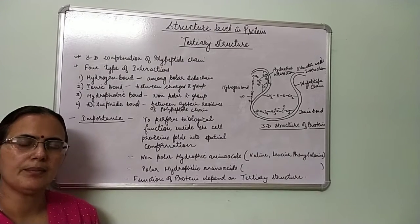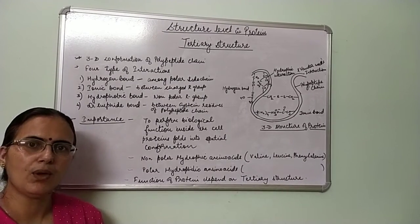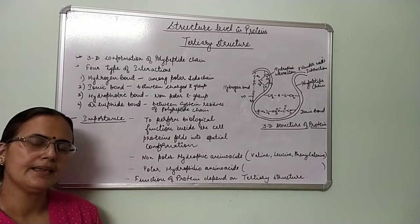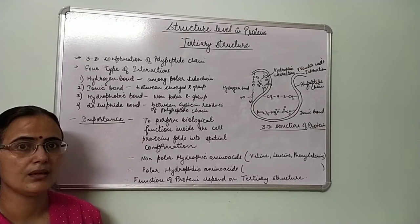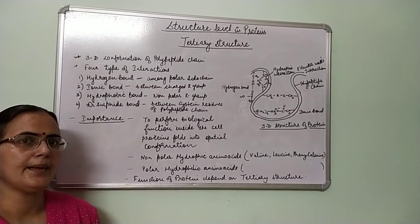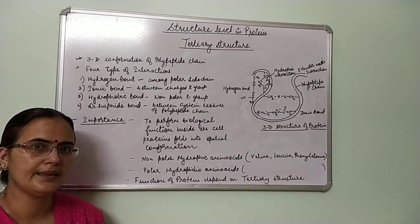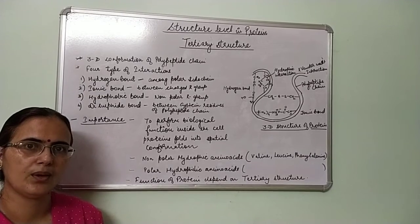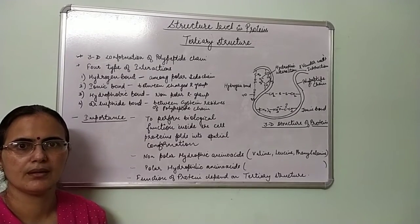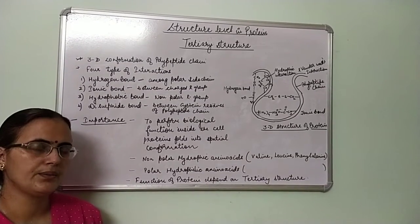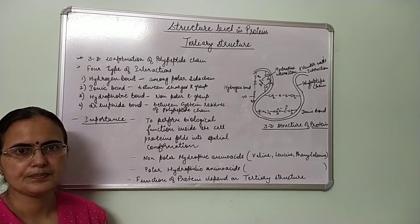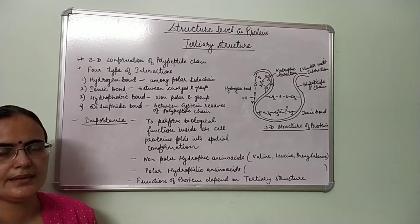The main type of bond involved in the primary structure is the peptide bond. In the secondary structure, which involves the folding and coiling of the polypeptide chain, the main bond is hydrogen bonding. Hydrogen bonding is of two types: intermolecular hydrogen bonding and intramolecular hydrogen bonding.